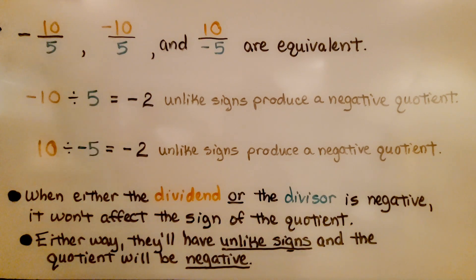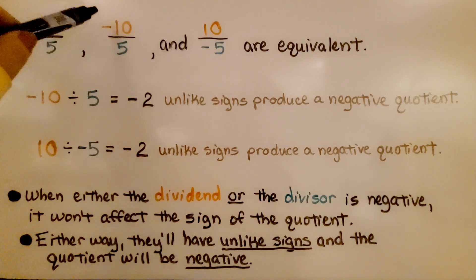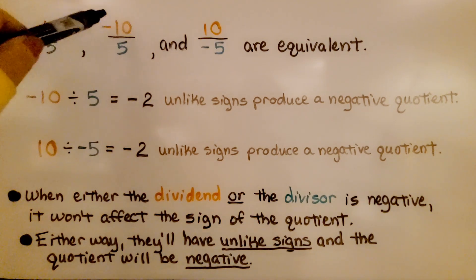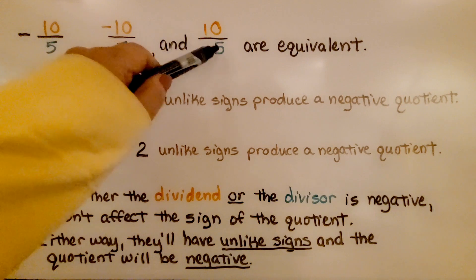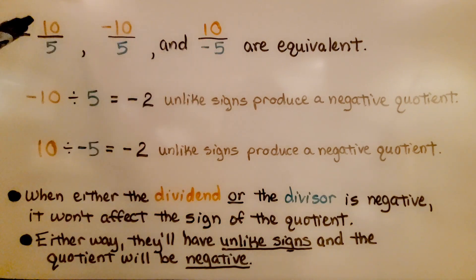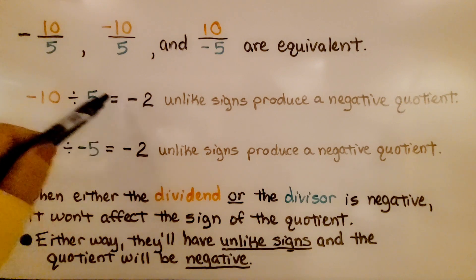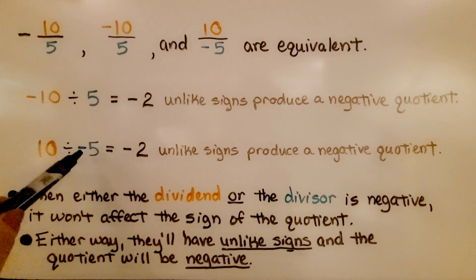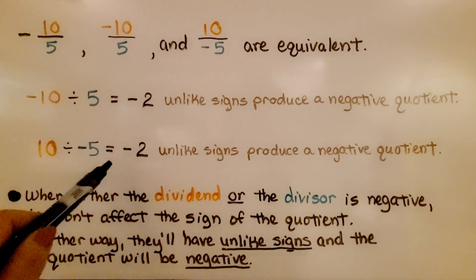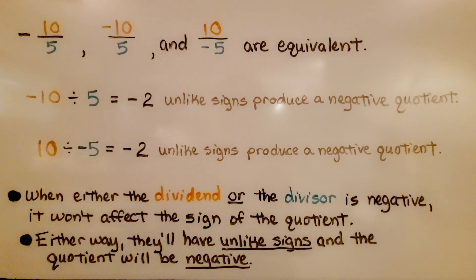Here it's written with a negative sign and then 10 fifths. Here it's written with the negative sign in the numerator — negative 10 fifths. And here we have 10 and a negative 5 for the denominator. These are all equivalent. Negative 10 divided by 5 equals negative 2; unlike signs produce a negative quotient. And 10 divided by negative 5 also equals negative 2; unlike signs produce a negative quotient. When either the dividend or the divisor is negative, the quotient will be negative regardless of placement.